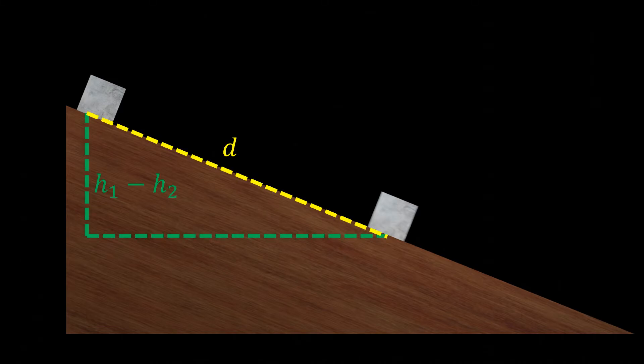We can form a right triangle with the distance the object slides, d, and the difference in heights, h1 minus h2. This angle, theta, is the angle of incline.